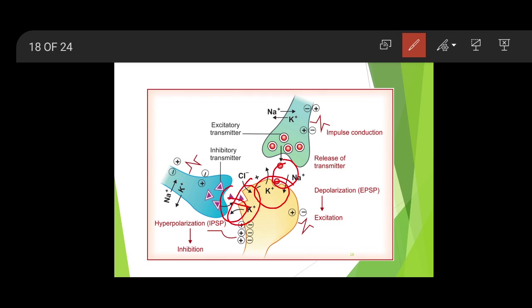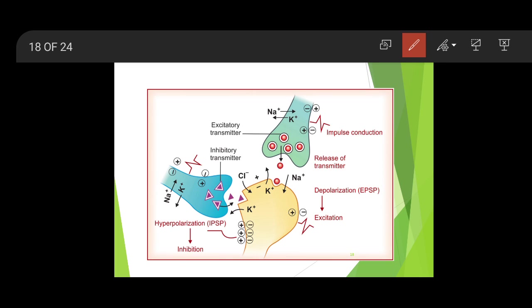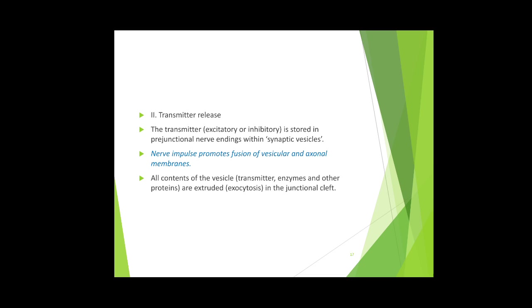Release of an excitatory neurotransmitter causes depolarization and excitation of the post-synaptic nerve terminal. Release of an inhibitory neurotransmitter causes hyperpolarization and inhibition of the post-synaptic nerve terminal. The nerve impulse promotes fusion of the synaptic vesicle and axonal membranes, and the contents — transmitter, enzymes, and other proteins — are extruded by exocytosis into the junctional cleft.